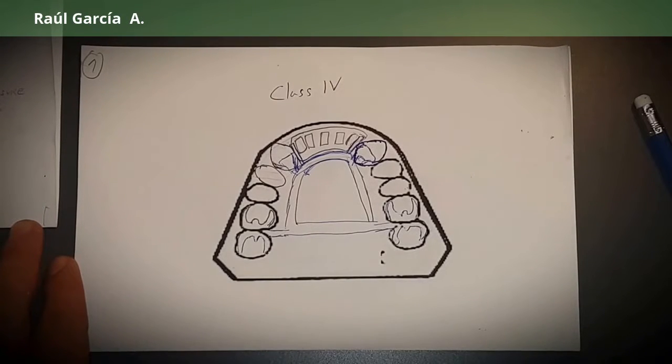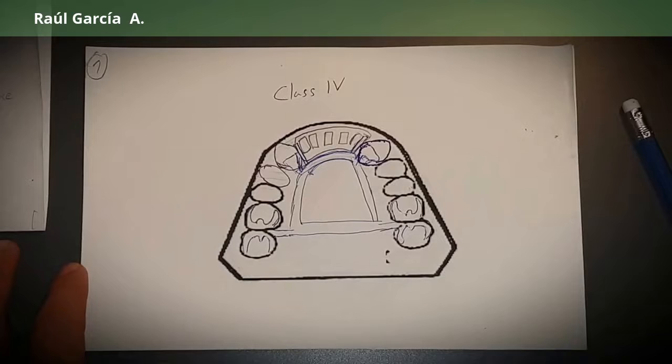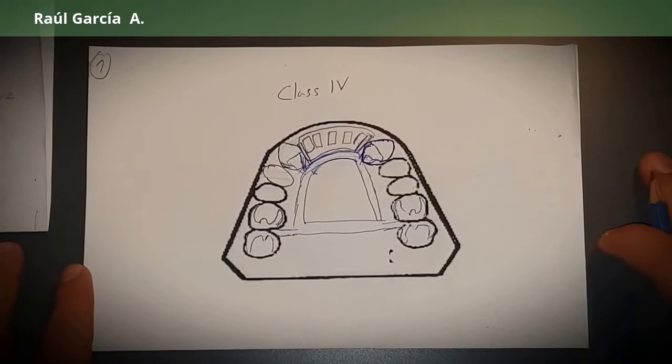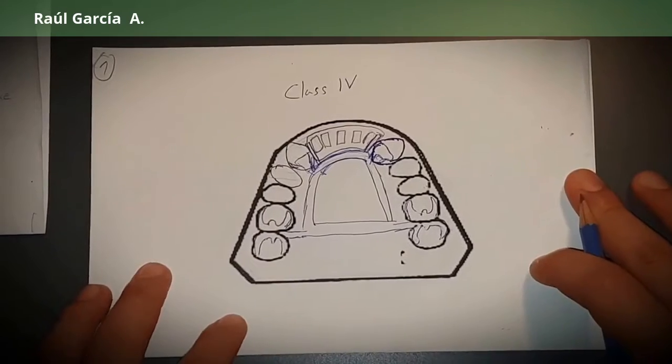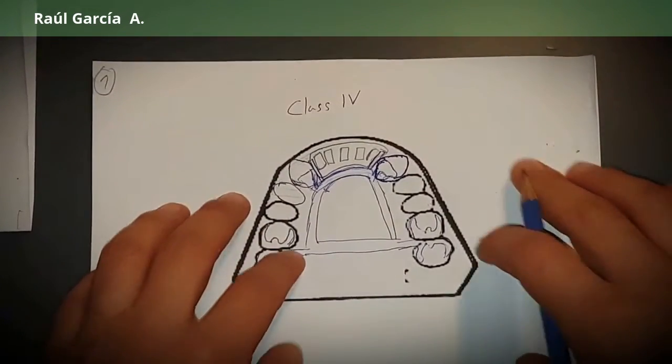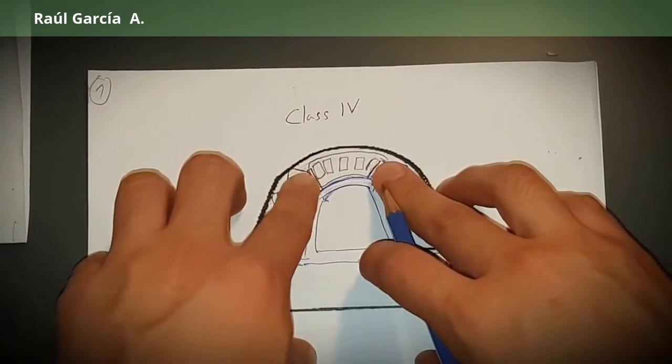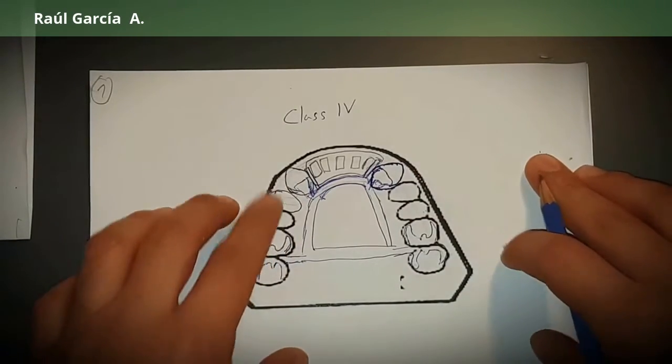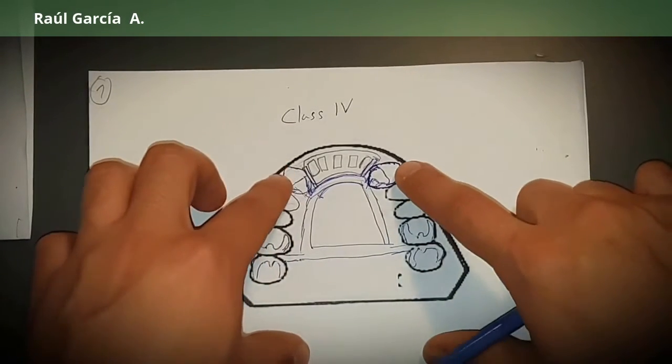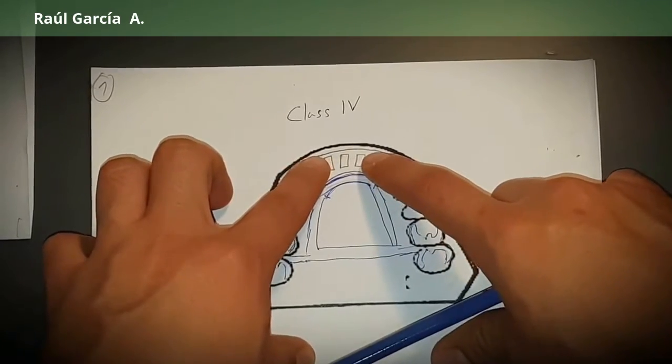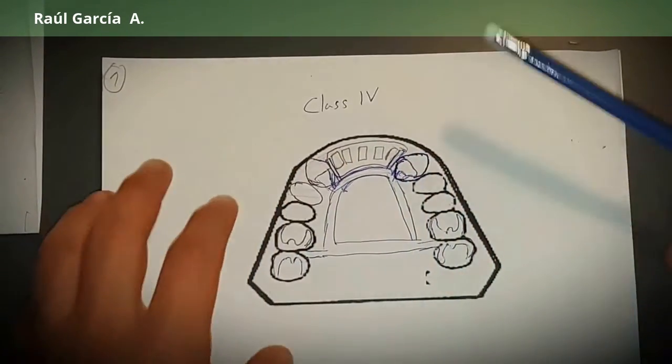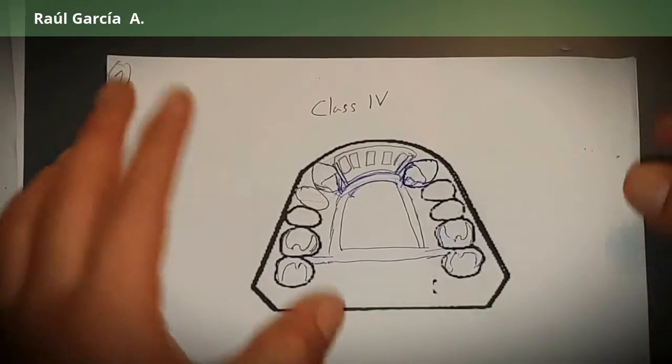Finally, now we're going to see Class 4 Kennedy. In this case, I'm going to show you three different scenarios. The first scenario in a Class 4 is when you just lose the anterior teeth. As long as we keep the canines, this small area that we're replacing just for anterior teeth, we can consider this as a tooth-segmented area with virtually no fulcrum.